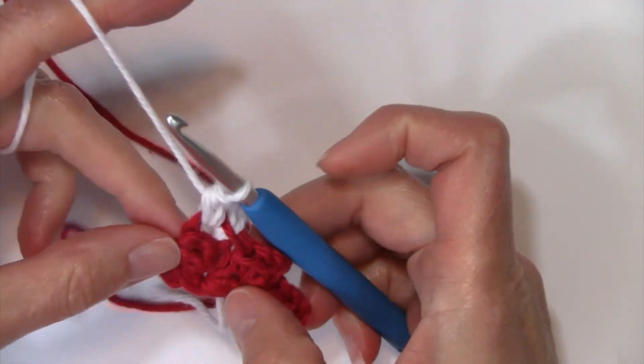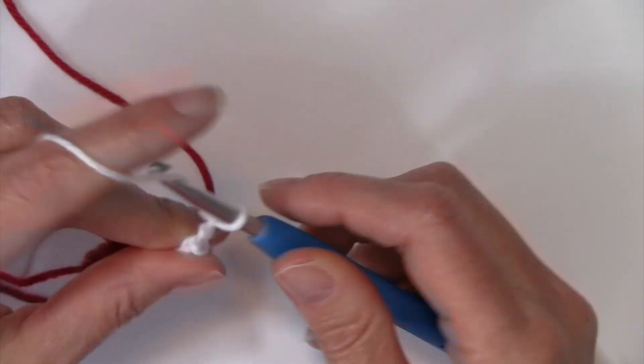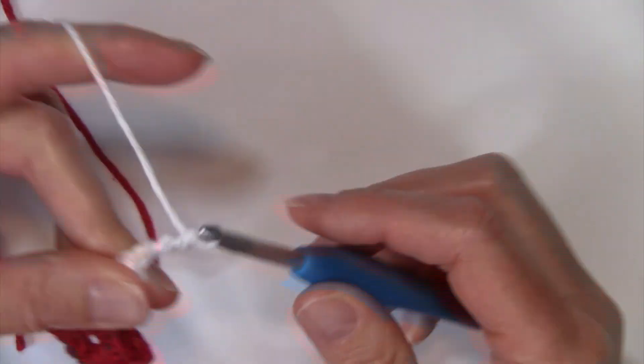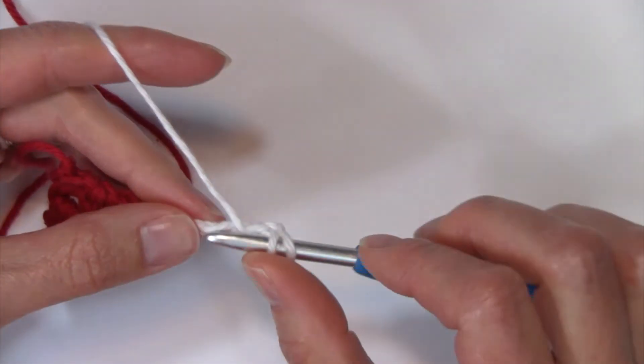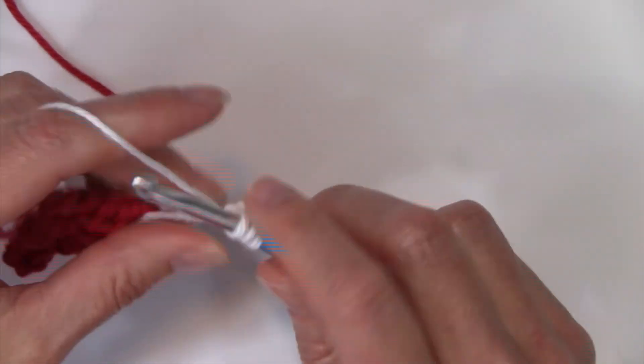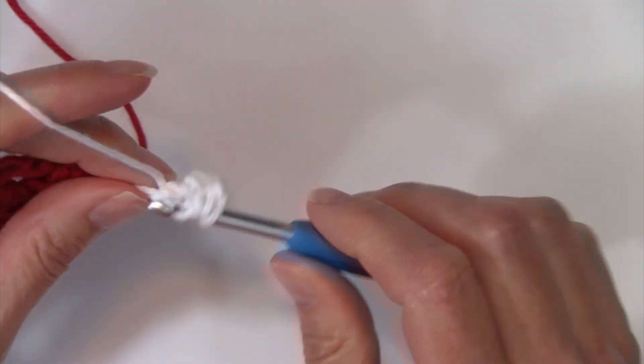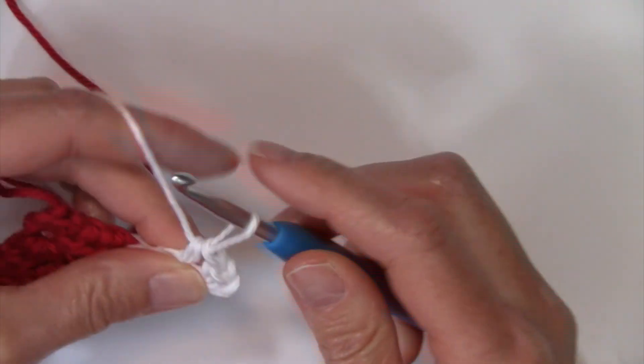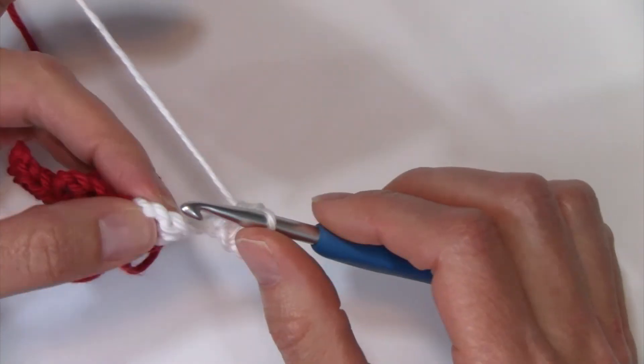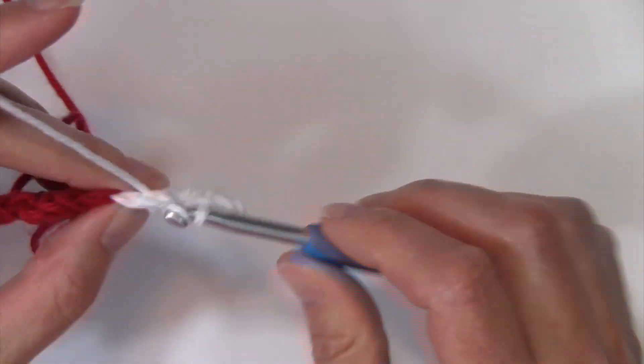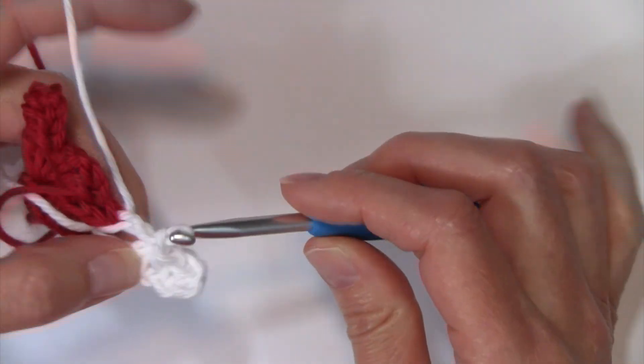We're going to increase again by chaining four, one, two, three, and four, working a half double crochet in that third chain from the hook and the fourth chain as well. And then slip stitch into the top of that chain two.